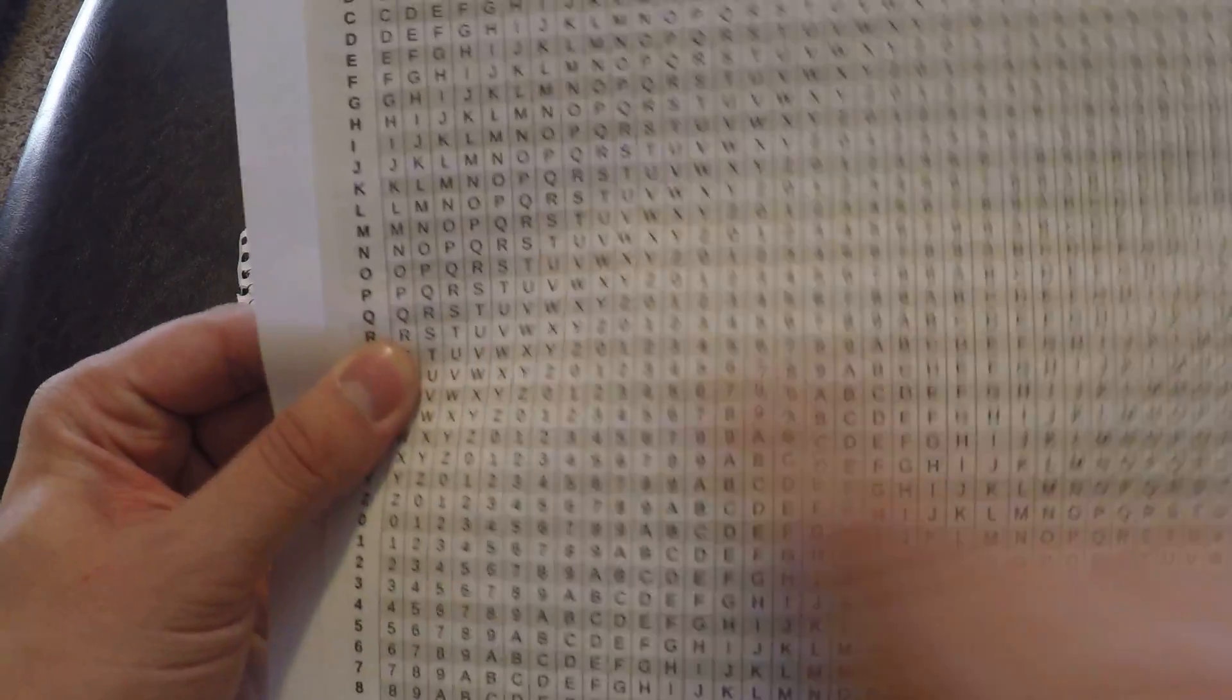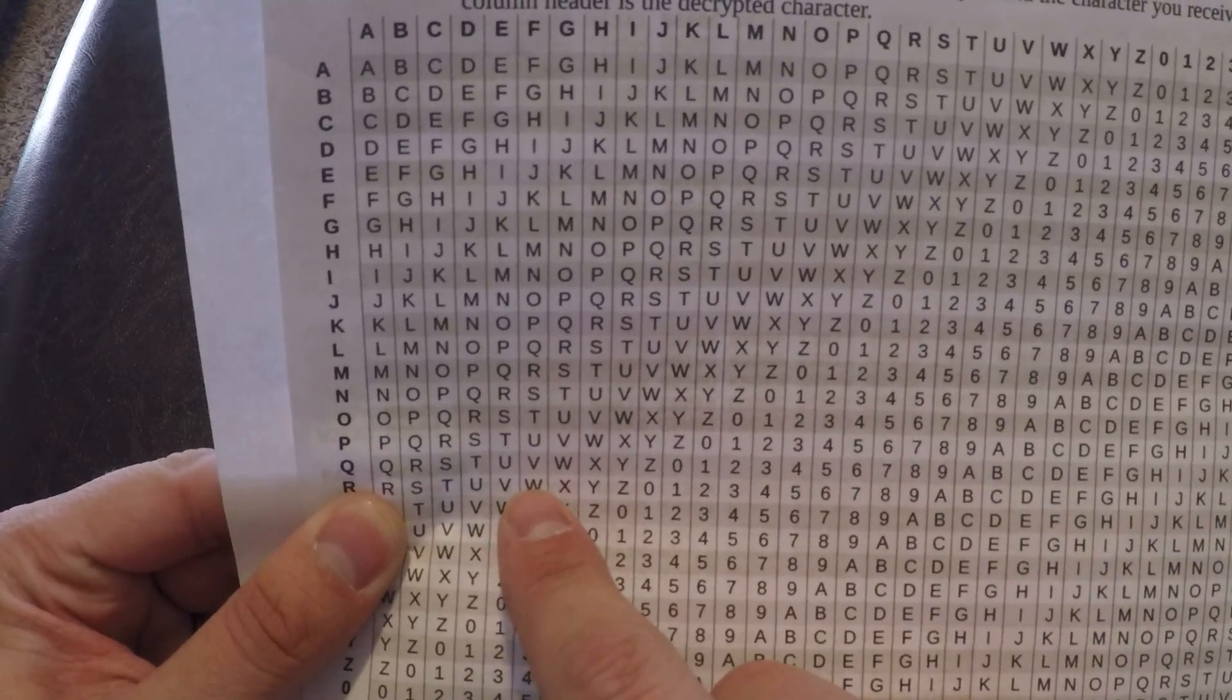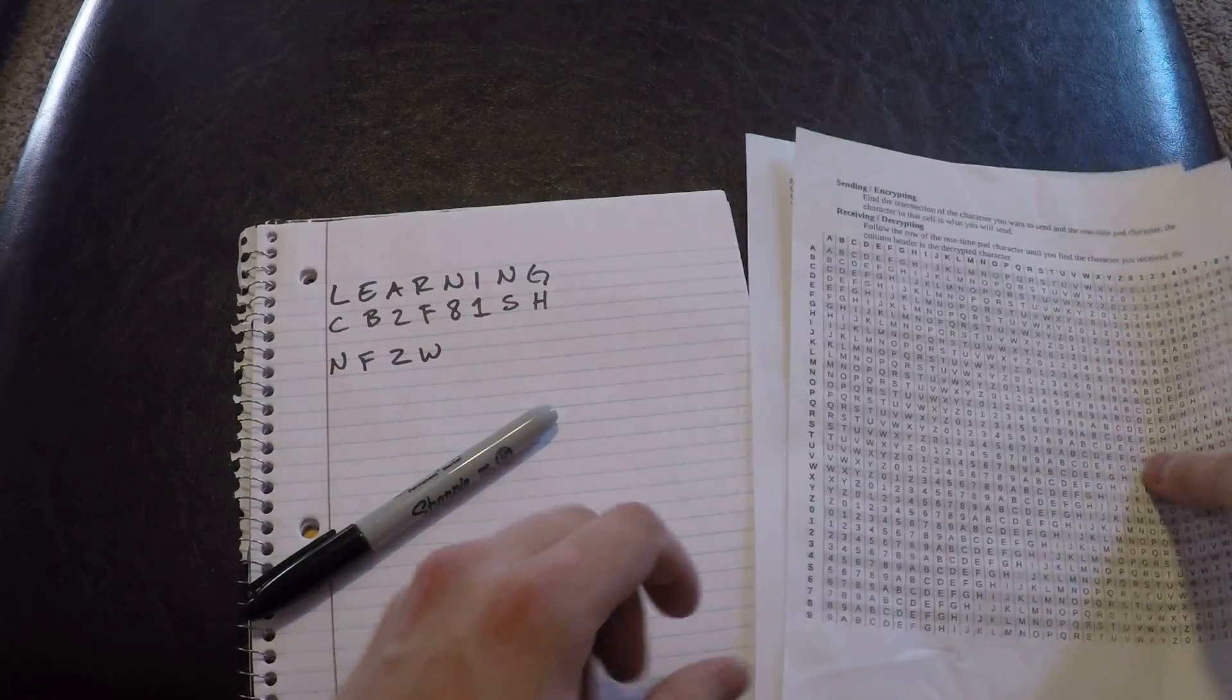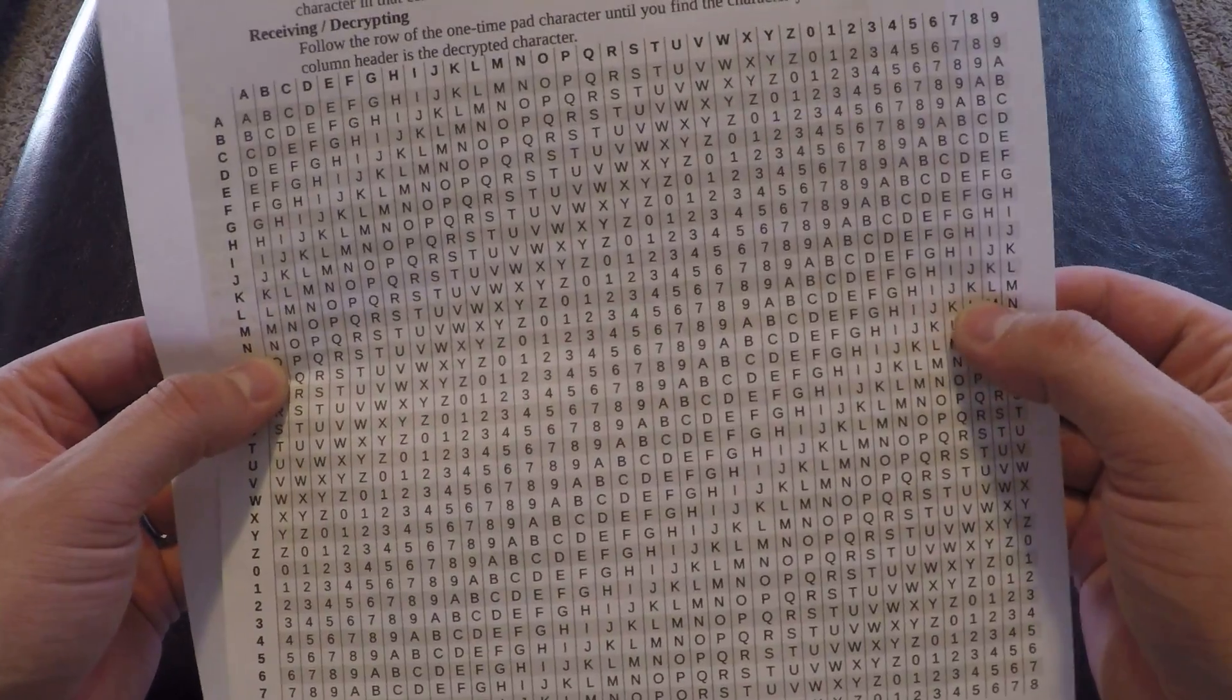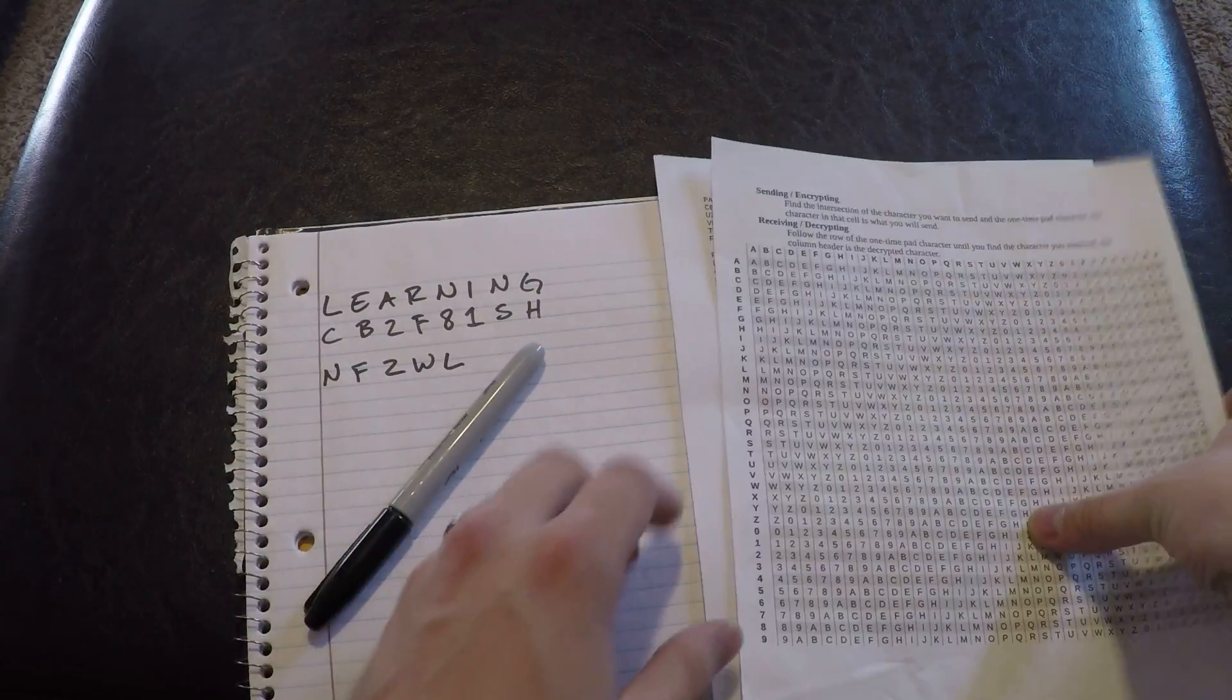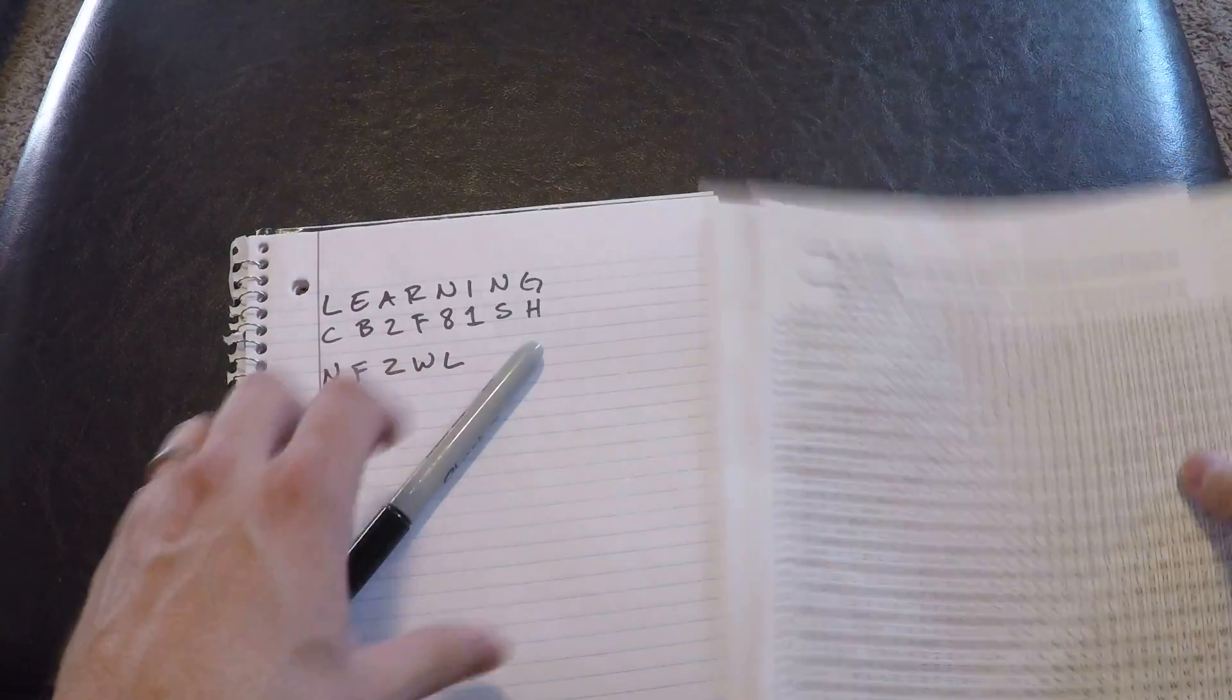Now we're going to add R and F. Find the intersection of those. R over to F, which is W over here. Then N and 8. N over to 8, which is way over here, which is L. I'm going to do these pretty quick here now. I think you guys get the gist of it.